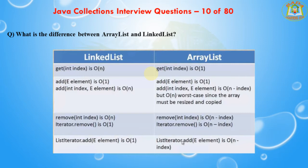The get(index) method in LinkedList is O(n), while in ArrayList it is O(1), so ArrayList retrieval is faster. In LinkedList, add(element) is O(1), but add(element, position) is O(n). In ArrayList, add(element) is O(1), and add(element, index) is O(n - index), but O(n) in the worst case since the array must be resized and copied.